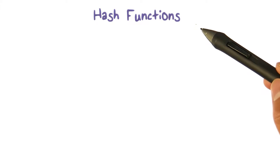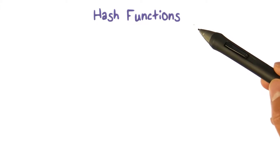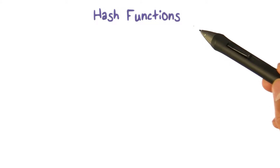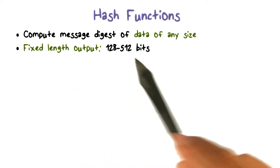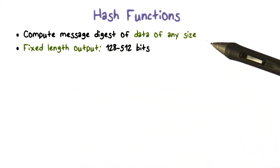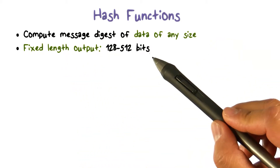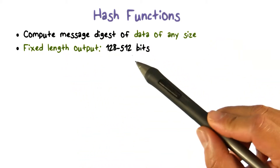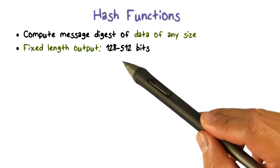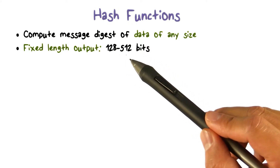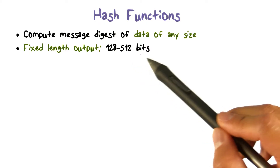The third type of cryptographic algorithms is hash functions. Hash functions don't use keys. A hash function computes the hash, or the message digest, of data of any size. The hash or message digest is a fixed-length output, typically in the range of 128 to 512 bits.